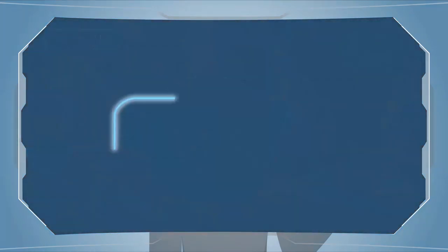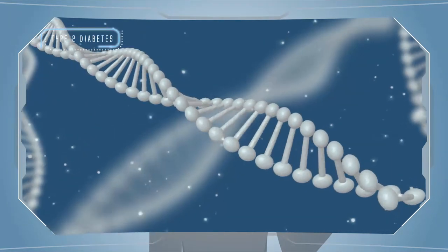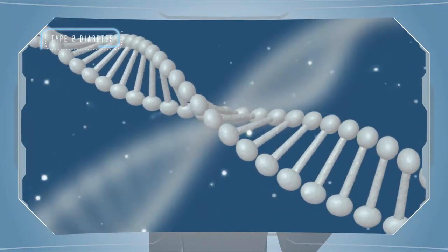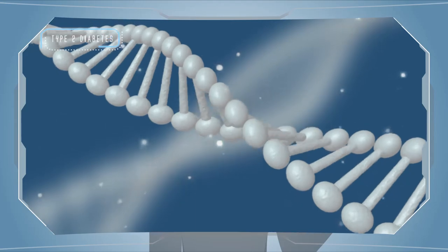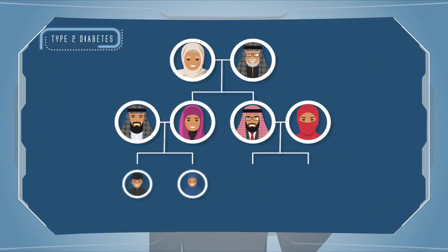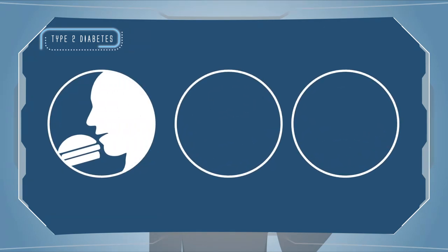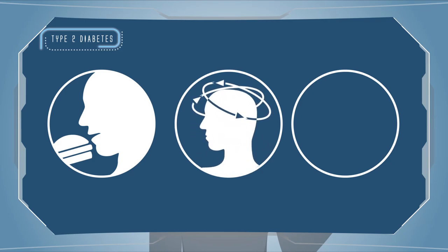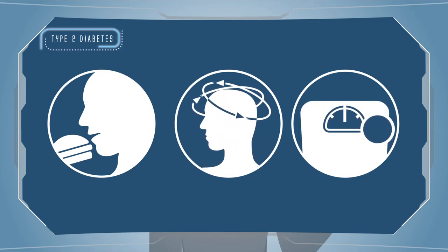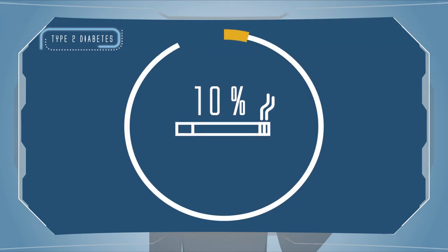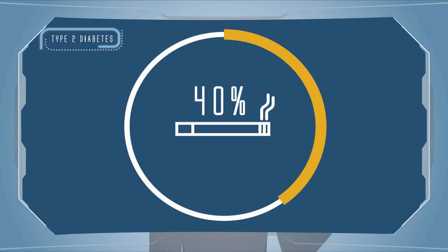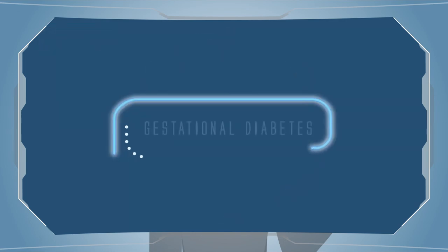Causes for Type 2 Diabetes: Type 2 diabetes stems from a combination of genetics and lifestyle factors. People with a family history of diabetes have more chances to develop Type 2 diabetes. A poor lifestyle like eating junk food, less physical activity, stress, and being overweight are the main causes. Smokers have 30–40% more chances to develop diabetes.